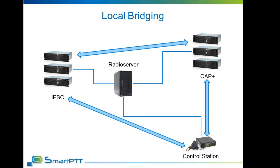Local bridging can be divided into static and dynamic. Static local bridging is the simplest method. You can specify needed routes between different systems which will handle the calls within the system. A static route defines specifically what is the source, what is the destination, and what is the content. For example, calls from a Capacity Plus system must be routed to a Control Station if a call is made to Group 2. This is called a static route for Group 2 between Capacity Plus and Control Station. Static routes can be implemented for all calls, group calls, or private calls.